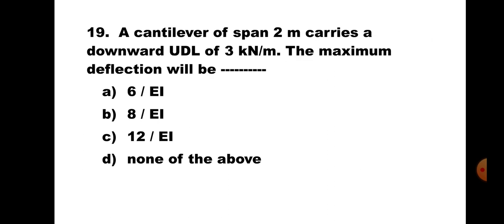Question number 19. A cantilever of span 2m carries a downward UDL of 3kN/m. The maximum deflection will be: A. 6/EI, B. 8/EI, C. 12/EI, D. None of the above. This is again the standard case of a cantilever carrying a UDL on the entire span. Maximum deflection is WL⁴/8EI. Putting all the values, you will get the answer as 6/EI. Hence, the correct answer is A. 6/EI.